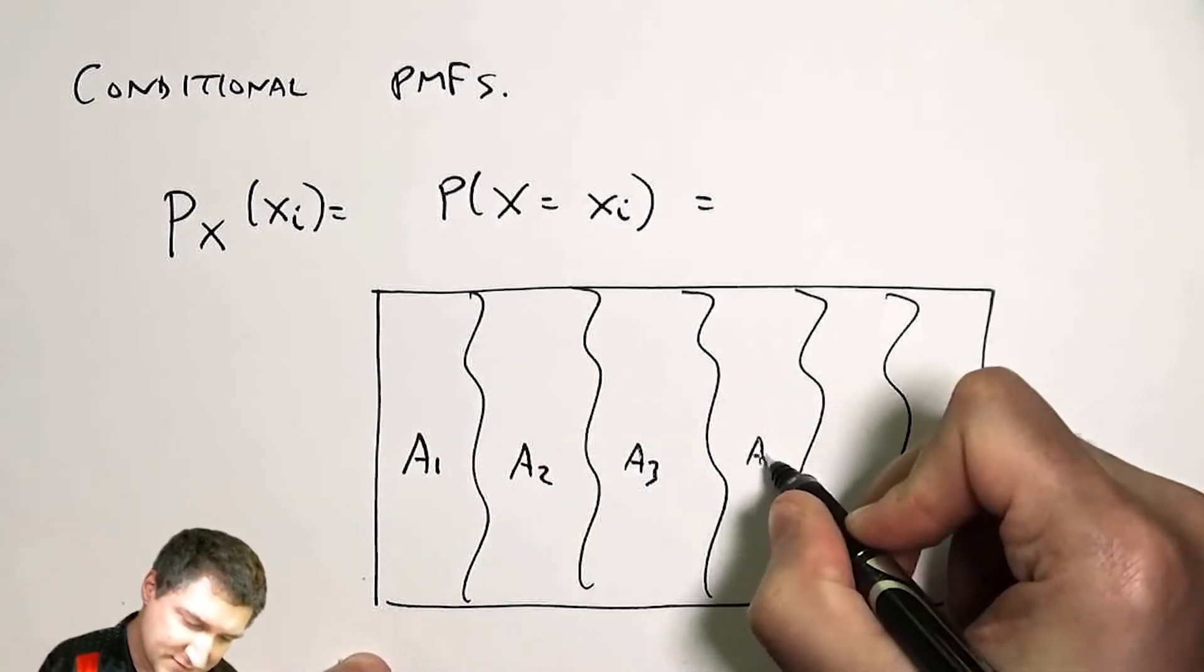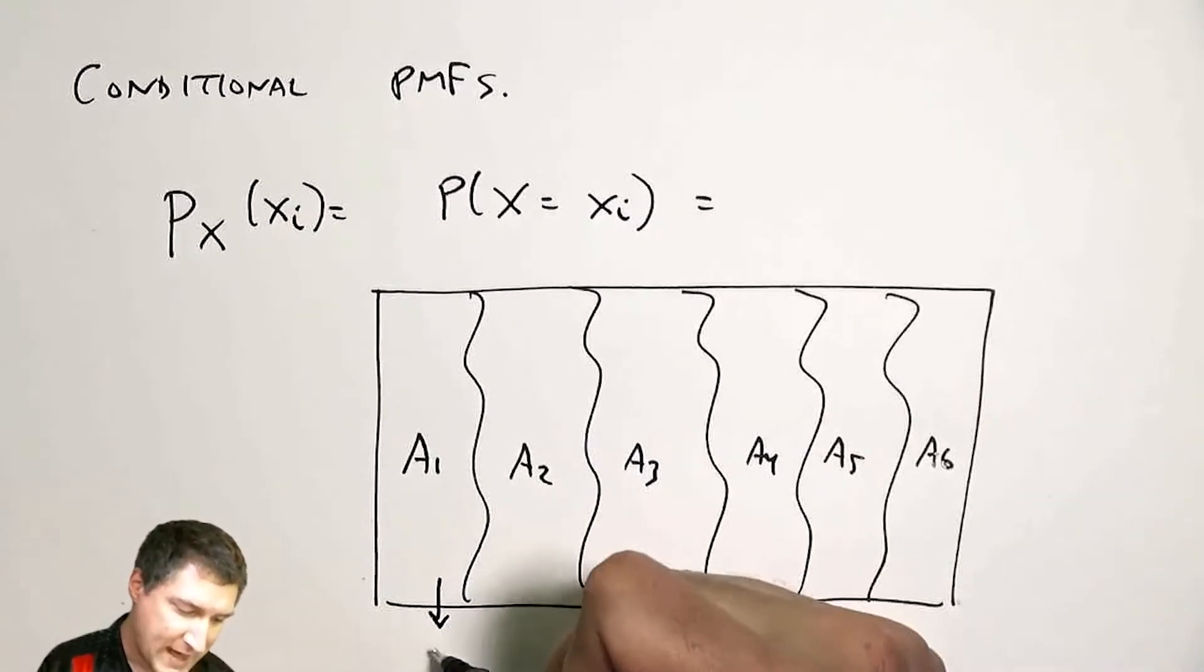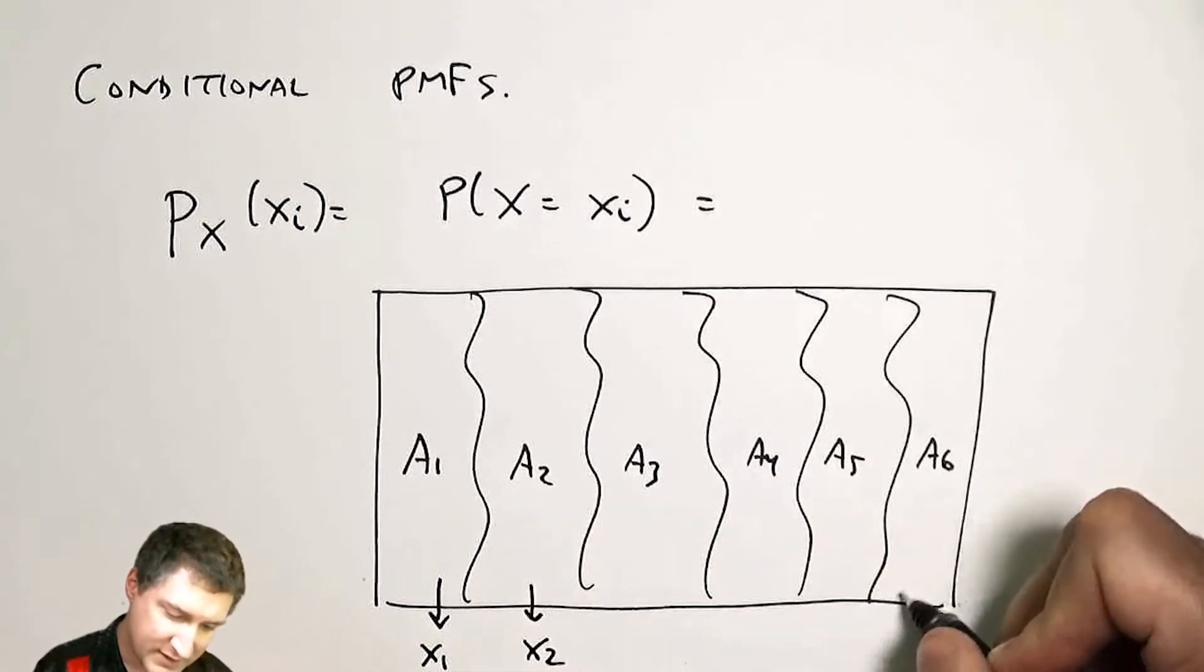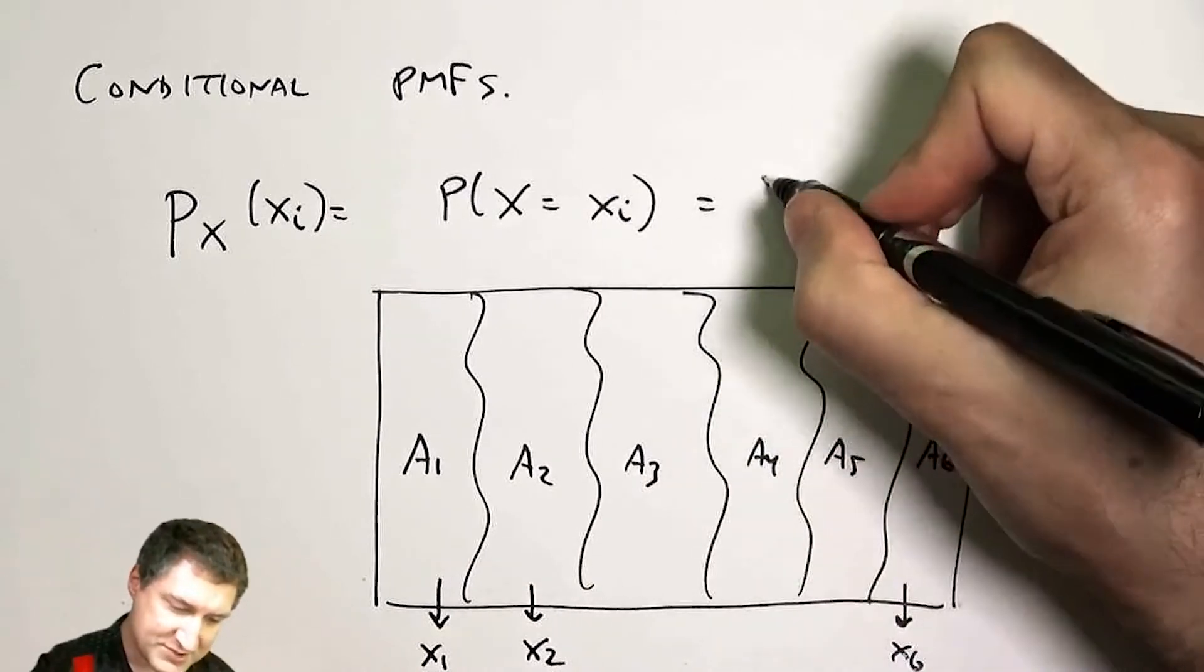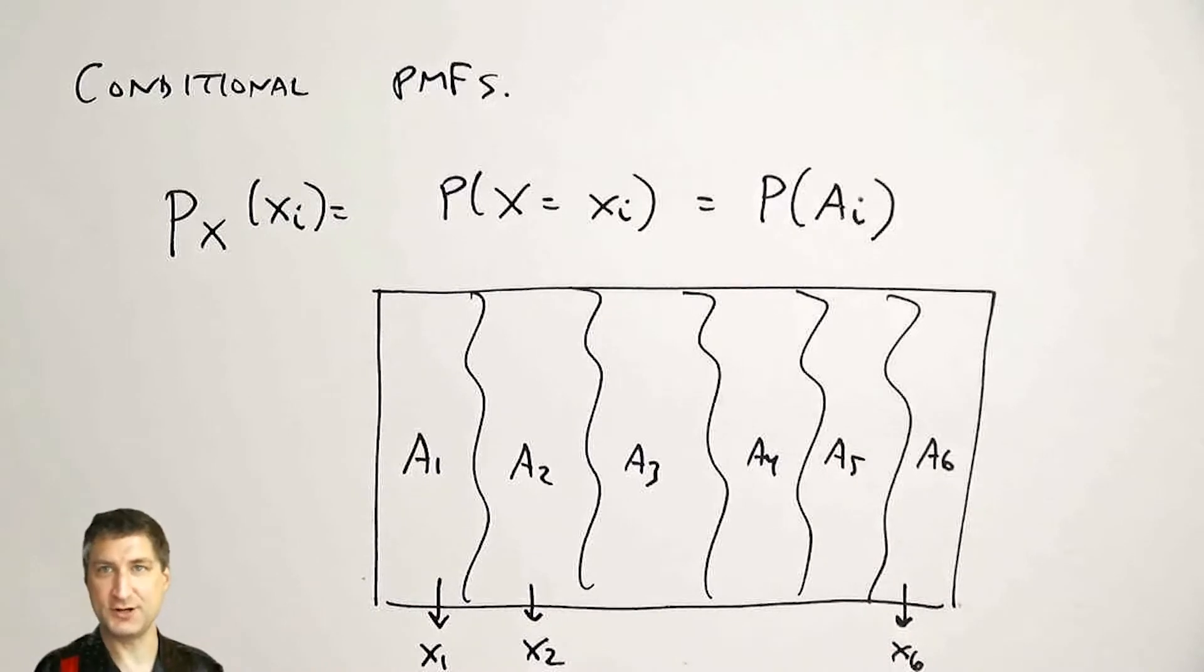All the outcomes in each of these events in the partition will map to one value of the random variable. So it's kind of like saying, what's the probability that this event in the sample space occurred?